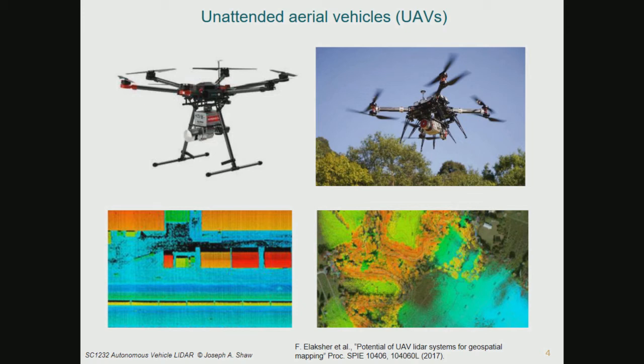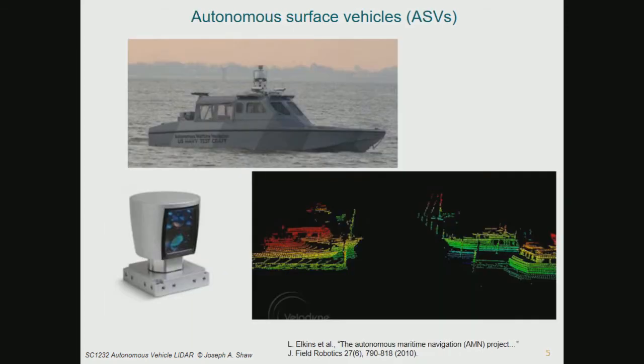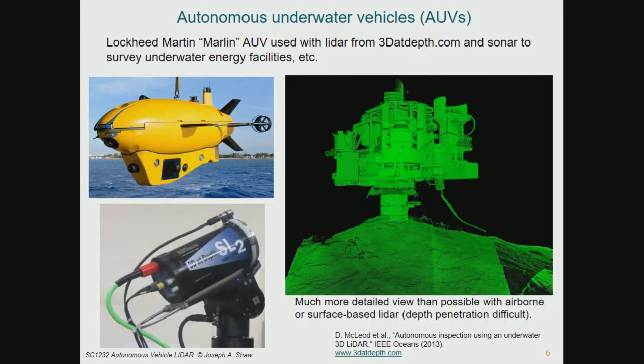We could have unmanned aerial vehicles — a LIDAR on a little quadcopter looking at a 3D map of some area. We can have surface vehicles on the water trying to navigate through a harbor. We could have underwater vehicles. A couple of people here were talking about interest in this, and there's actually a company started by someone I know that is doing exactly that — LIDARs on autonomous vehicles underwater.